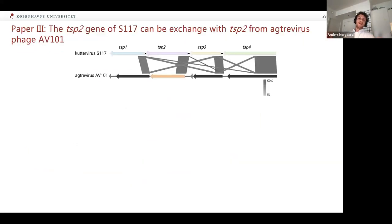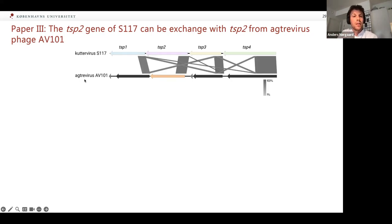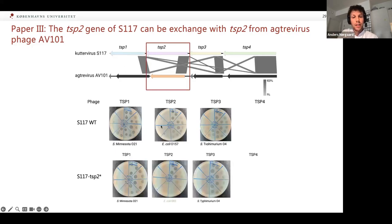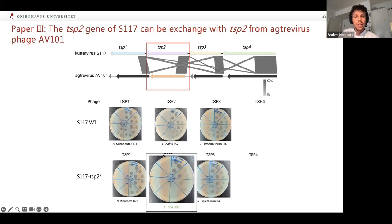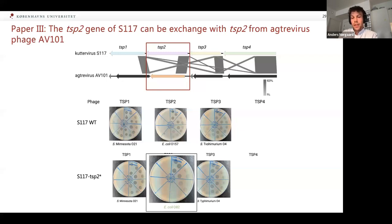We then asked: can we do it with phages in other genera? Our first paper showed that tail spike subtypes were only associated with their phage genus. But we thought the genes should be exchangeable between genera because the internal sequences are so similar. We exchanged tail spike 2 between AV101 from the Agtrevirus genus and S117. The engineered tail spike 2 phage can now infect E. coli with an O82 O-antigen instead of O157. So it is indeed possible to exchange tail spike genes not only within the Cotavirus genus but also with the Agtrevirus genus.